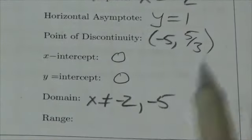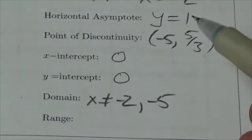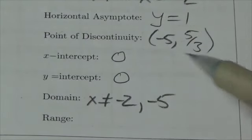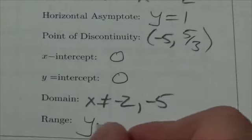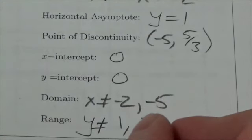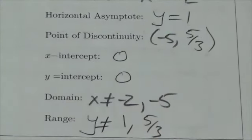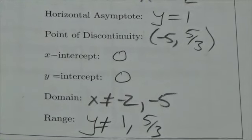And now, finally, I can go down to my range. If I look at the horizontal asymptote and the y coordinate of the point discontinuity, I can say y cannot equal 1 or 5 thirds. That's the connection that we need to make for the diploma.